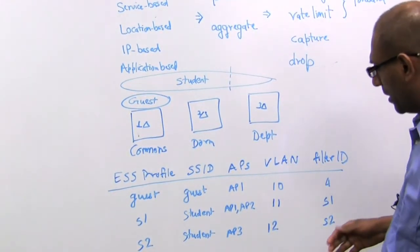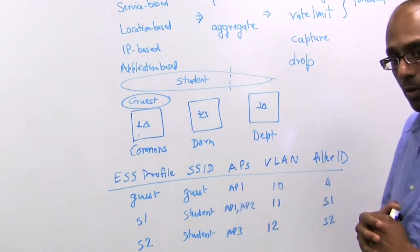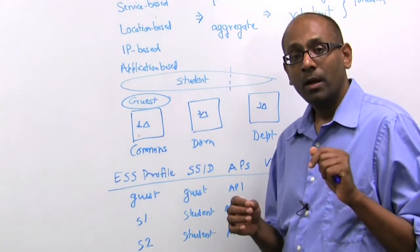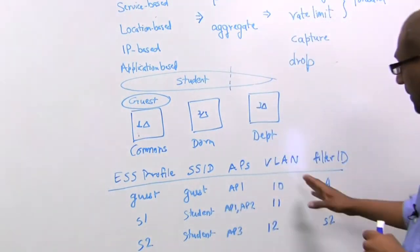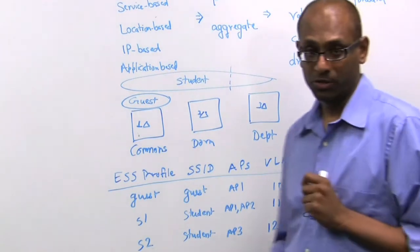Now when a particular device comes into the network, it is possible, based on a RADIUS server or a back-end policy engine, to override both the VLAN and the filter ID for a particular user.